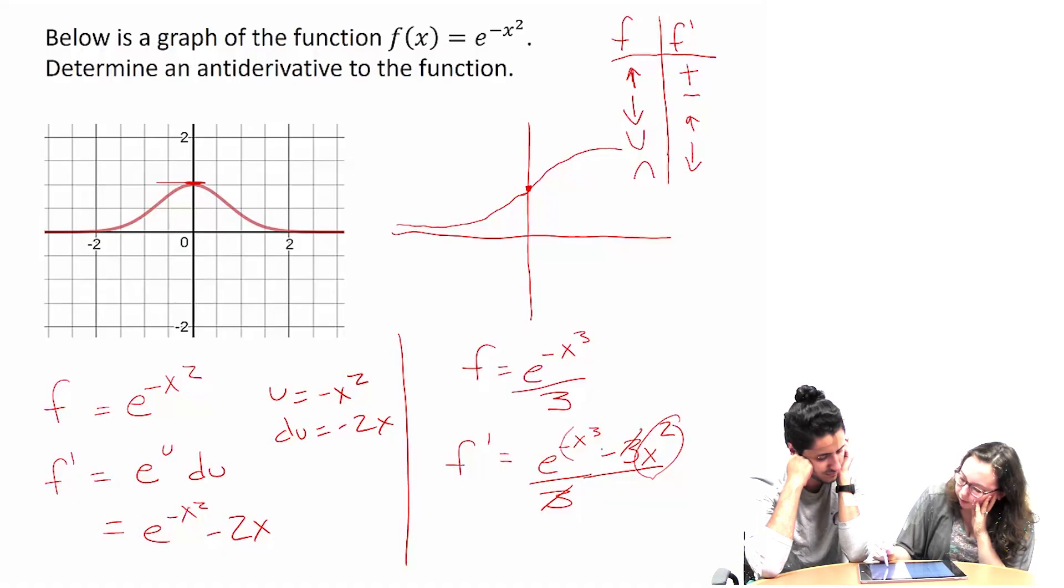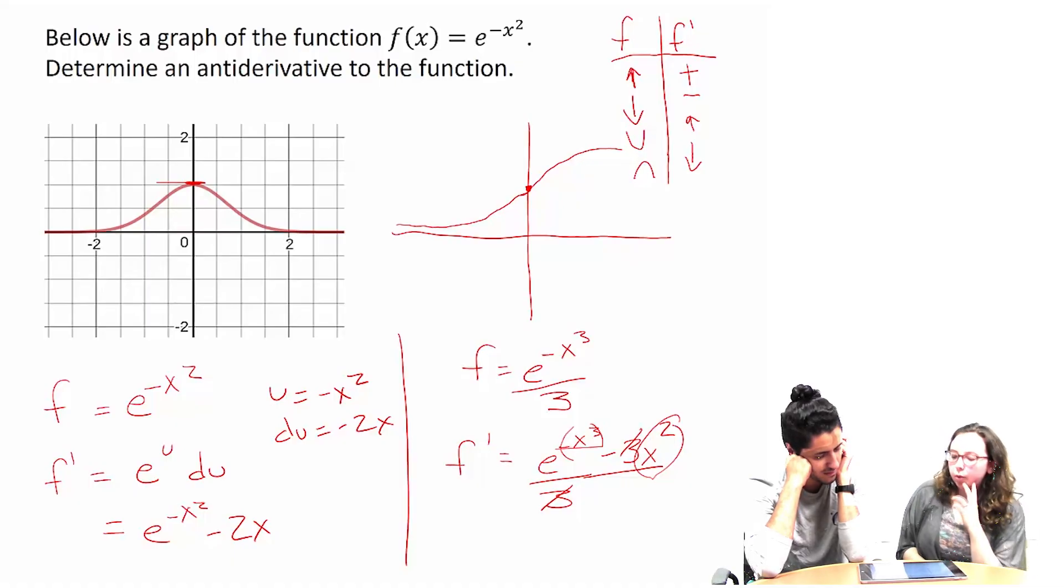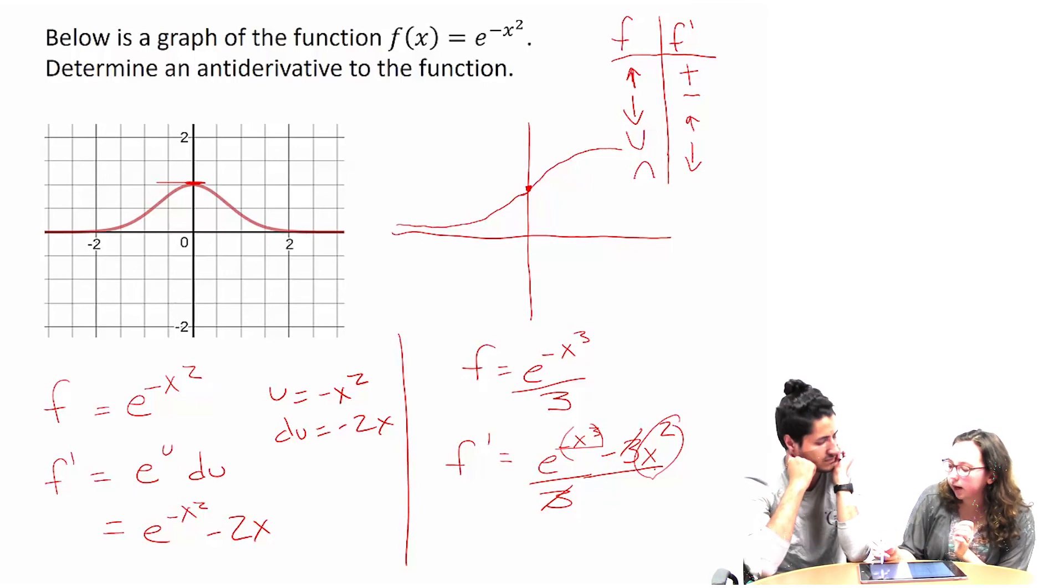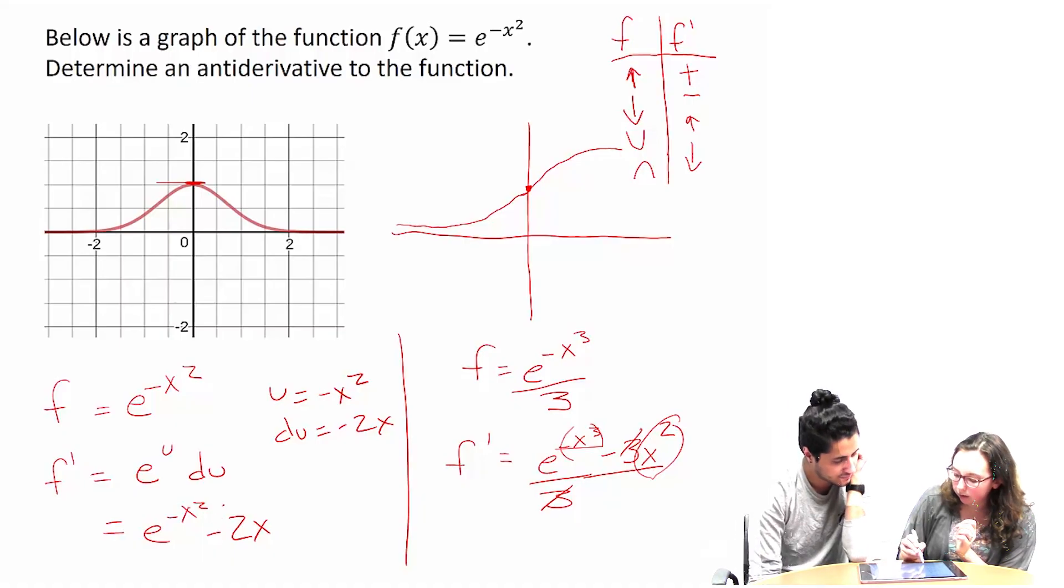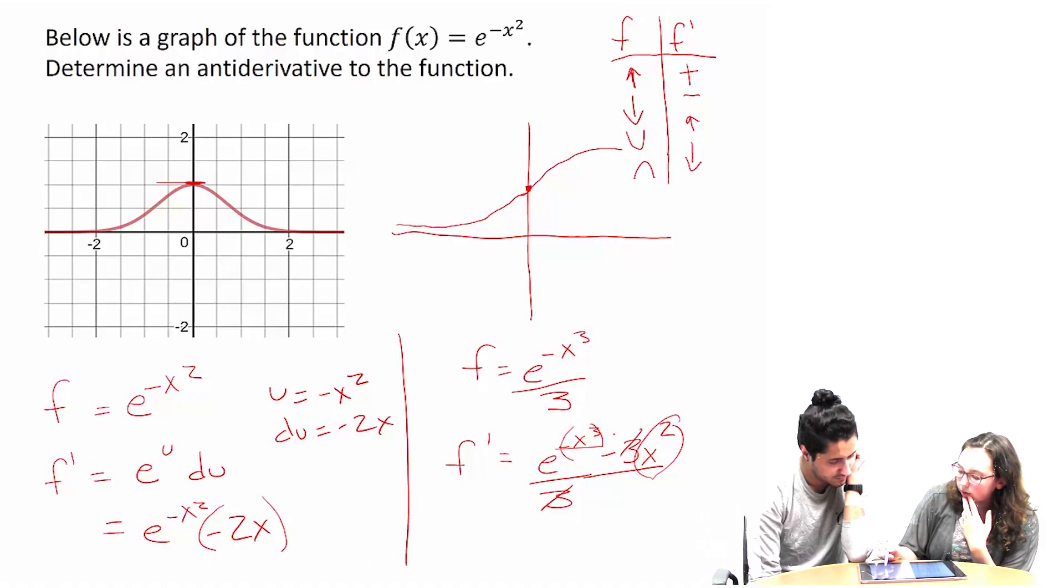That's not what we originally have. I don't really know other functions that might work. I feel like we're always going to end up with something different than what we want. Like there's always going to be something tacked on. Like here we had that term that we don't want multiplied, and now we have this term.